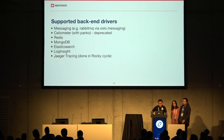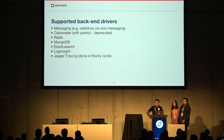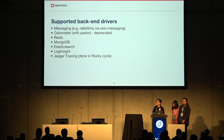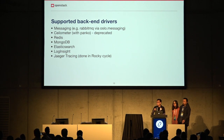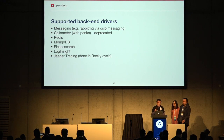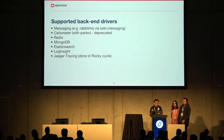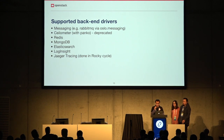Currently OS profiler supports many backend drivers: messaging with RabbitMQ via Oslo messaging by default, Elasticsearch, Redis, MongoDB, Loginsight, and storing directly to Panko — though this last one will be deprecated in the future. Jaeger tracing has been added in the Rocky cycle.